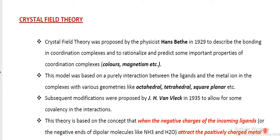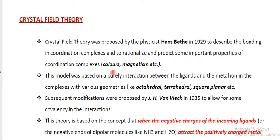For the last few days, we have been discussing the theories of bonding in coordination compounds. Today we are discussing the third theory, which is crystal field theory. This theory was proposed by physicist Hans Bethe in 1929 to describe the bonding in coordination complexes and to rationalize and predict important properties such as color and magnetism, which were not clearly discussed in earlier theories like VBT and the Sidgwick theory.